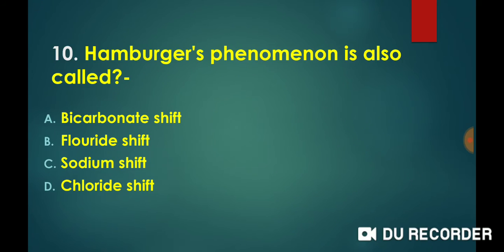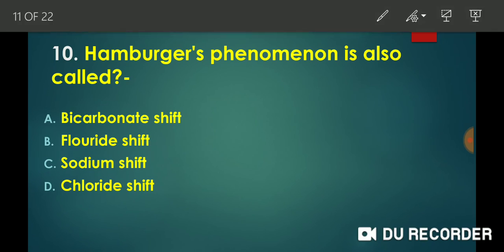Hamburger's phenomenon — what is it called? Hamburger's phenomenon occurs in the blood and involves the exchange of bicarbonate and chloride ions. This exchange is also called the chloride shift. So the answer to this question is chloride shift.